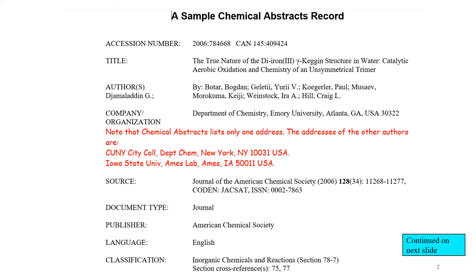Chemical Abstracts lists the title exactly as they find it in the original paper, and they list all the authors exactly as they are listed in the original paper. Note what I put in red — they only list one address, even though the original paper had these people working at different addresses and listed all of them. This is one place where the Web of Science (Science Citation Index) is a little stronger, as they do list all the addresses.